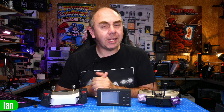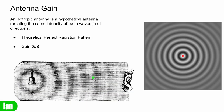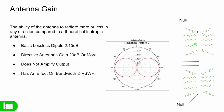Next we're going to talk about antenna gain — explain what that is and how it has an effect on the performance of your antenna. Gain is the term for how sensitive or how well the antenna performs compared to what is known as an isotropic antenna. An isotropic antenna is a hypothetical antenna that radiates the same intensity of radio waves in all directions — it has the perfect radiation pattern where the signal is equally distributed in every direction, and that would be known as a gain of 0 dB. Gain is simply the ability of the antenna to radiate more or less in any direction compared to that theoretical isotropic antenna.